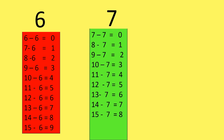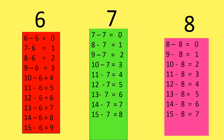Now let's learn the Subtraction Table of 8. 8 minus 8 is equal to 0. 9 minus 8 is equal to 1. 10 minus 8 is equal to 2. 11 minus 8 is equal to 3. 12 minus 8 is equal to 4. 13 minus 8 is equal to 5. 14 minus 8 is equal to 6. 15 minus 8 is equal to 7.